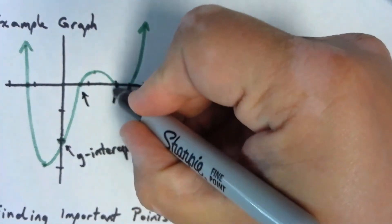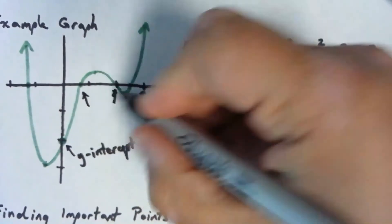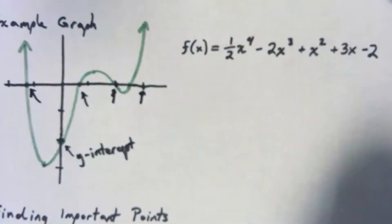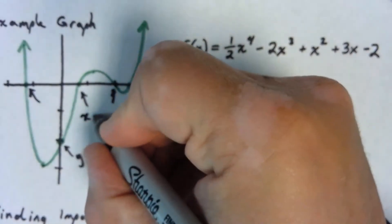Here, here, and here where it crosses, actually four different ones over here. These are all x-intercepts.